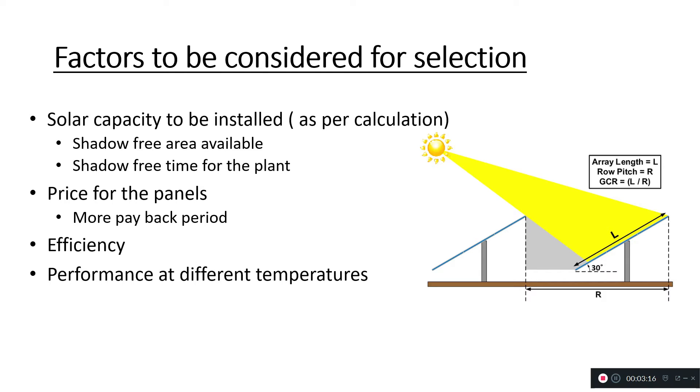The next thing you can do is reduce the pitch between the two rows of your installation. As you can see on your screen, these are the two rows with solar panels. The distance from the end of this panel to the end of this panel is called the pitch. To accommodate more modules in a particular area, you reduce this distance.